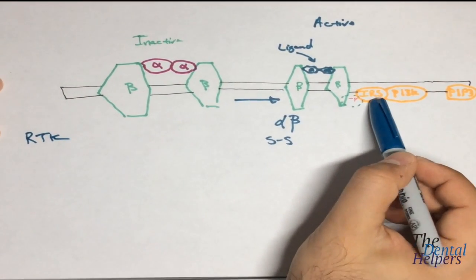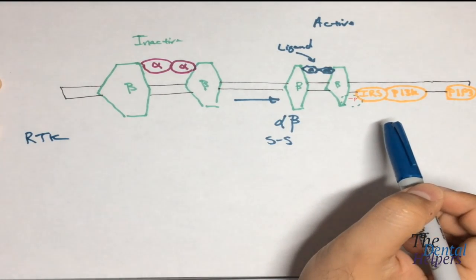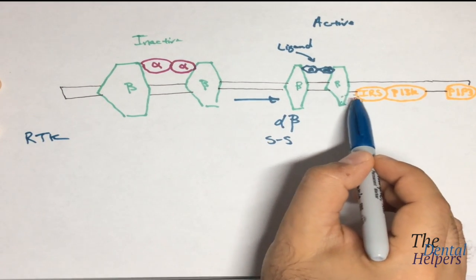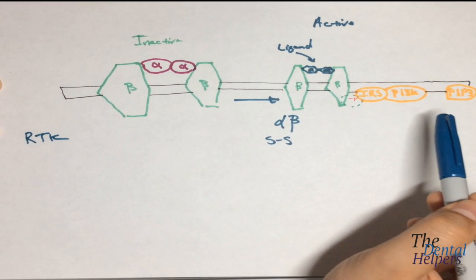And just remember, IRS in this case is not the Internal Revenue Service. Instead, it's insulin receptor substrate. So the phosphorylate will leave the beta subunit and phosphorylate the insulin receptor substrate.